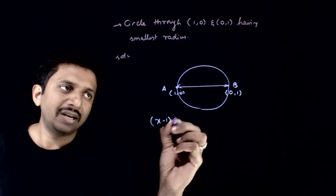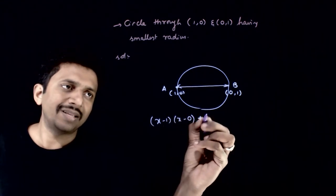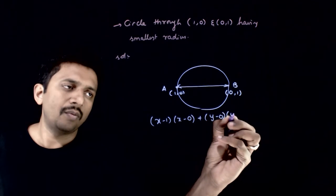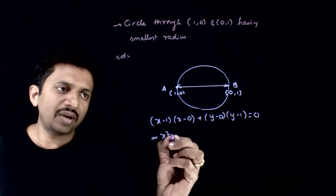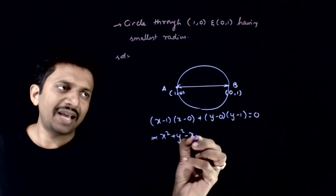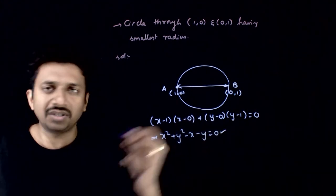It is (x - 1)(x - 0) + (y - 0)(y - 1) = 0. This implies x² + y² - x - y = 0.